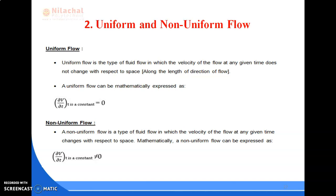Next is uniform and non-uniform. Uniform flow is the type of fluid flow in which the velocity of the flow at any given time does not change with respect to space. We represent it mathematically like this. In case of non-uniform, the velocity of the flow at any given time changes with respect to space. Velocity changes with respect to space.